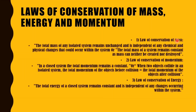The law of conservation of mass states that the total mass of any isolated system remains unchanged and is independent of any chemical and physical changes occurring within the system. In simpler terms, the total mass of a system remains constant because mass can neither be created nor be destroyed.